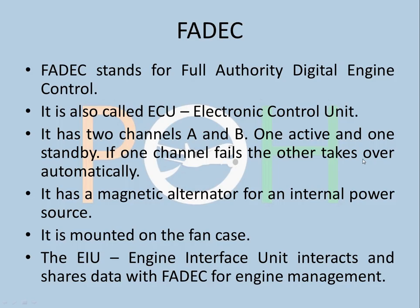FADEC stands for Full Authority Digital Engine Control. It is also called the ECU — Electronic Control Unit, not Engine Control Unit. It has two channels, A and B; one is active and one is standby. If one channel fails, the other takes over automatically. It has a magnetic alternator for an internal power source, so it does not depend on the aircraft power source at all. It is mounted on the fan case. The EIU, Engine Interface Unit, interacts and shares data with the FADEC for engine management — it is the interface unit between the FADEC and the other systems.